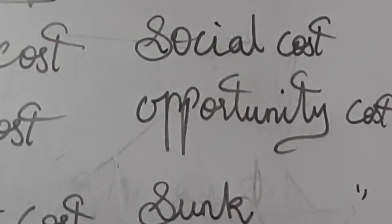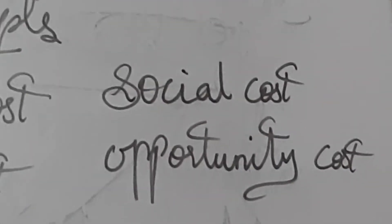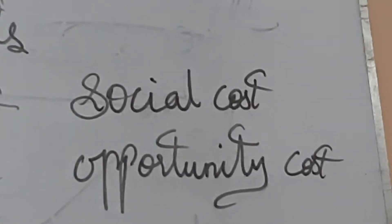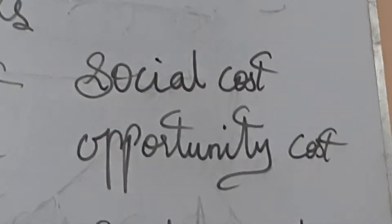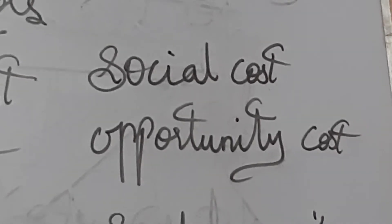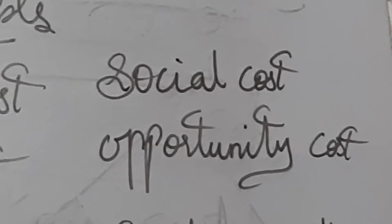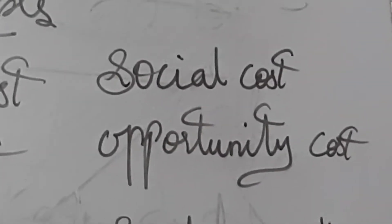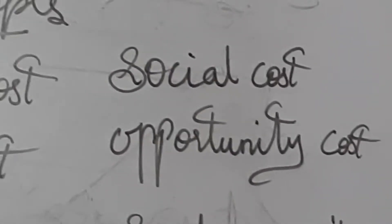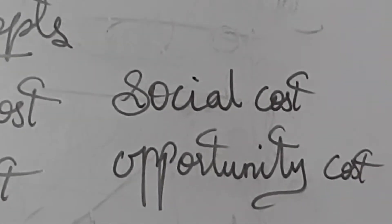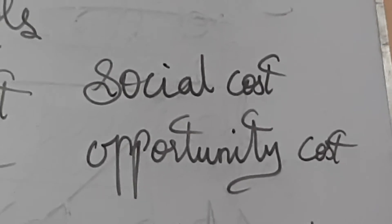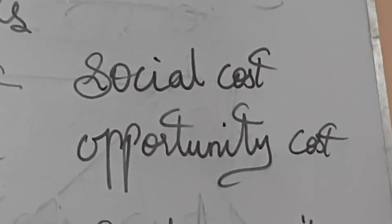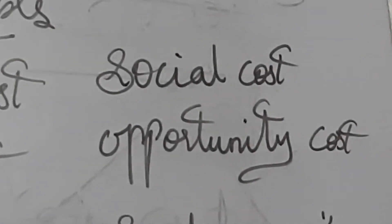Opportunity cost refers to the cost of the next best alternative use. For example, a farmer can cultivate paddy or sugarcane on the same land. If he cultivates paddy, the opportunity cost of the paddy output is the amount of sugarcane output foregone. This is also called alternative cost or transfer cost.